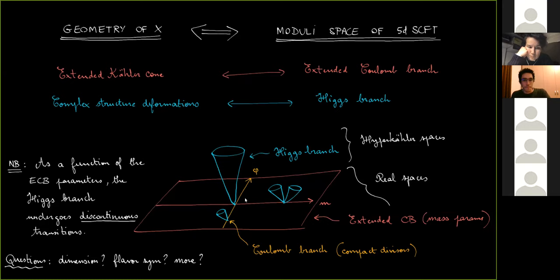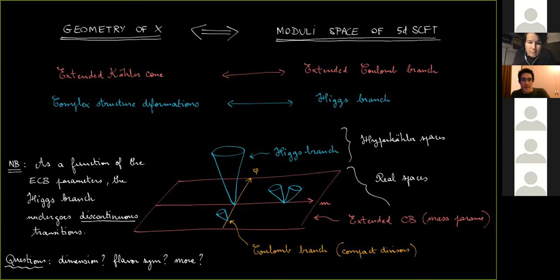There is another component to the moduli space, which is the Higgs branch. These Higgs branches are represented as blue cones, which geometrically correspond to the complex structure deformations. It is crucial that they are singular spaces and typically hyperkähler cones. Their geometric properties are very different from the Coulomb branch: the Coulomb branch is a real space in five dimensions, while the Higgs branch, as in any dimension, is hyperkähler. So dimensions of the Higgs branch are counted in terms of quaternionic dimension.